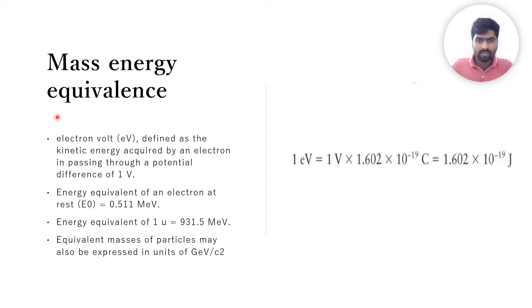Now let's talk about mass-energy equivalence. The basic unit of energy is joule, but in terms of electrons we need to introduce a new term called electron volt. Electron volt is defined as the kinetic energy acquired by an electron in passing through a potential difference of one volt. If we still want to convert it into joules, one electron volt equals 1.602 times 10 to the power minus 19 joules.